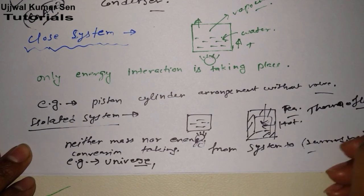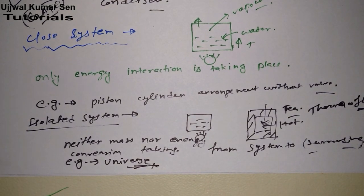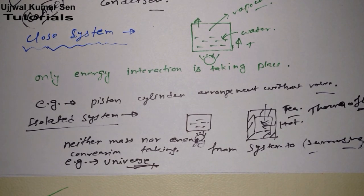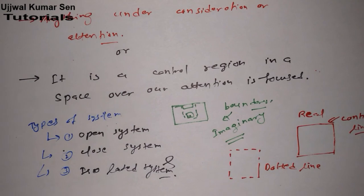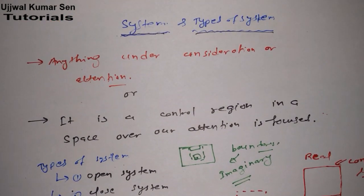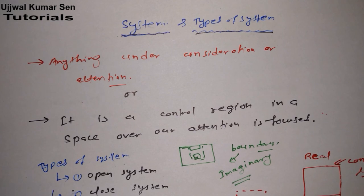An example of an isolated system is a thermoflex. The best example of an isolated system is the universe. I hope you understand system and types of system with examples. If you liked the tutorial, share it with your friends, and subscribe to my channel for more videos. Thanks for watching — see you in my next video.